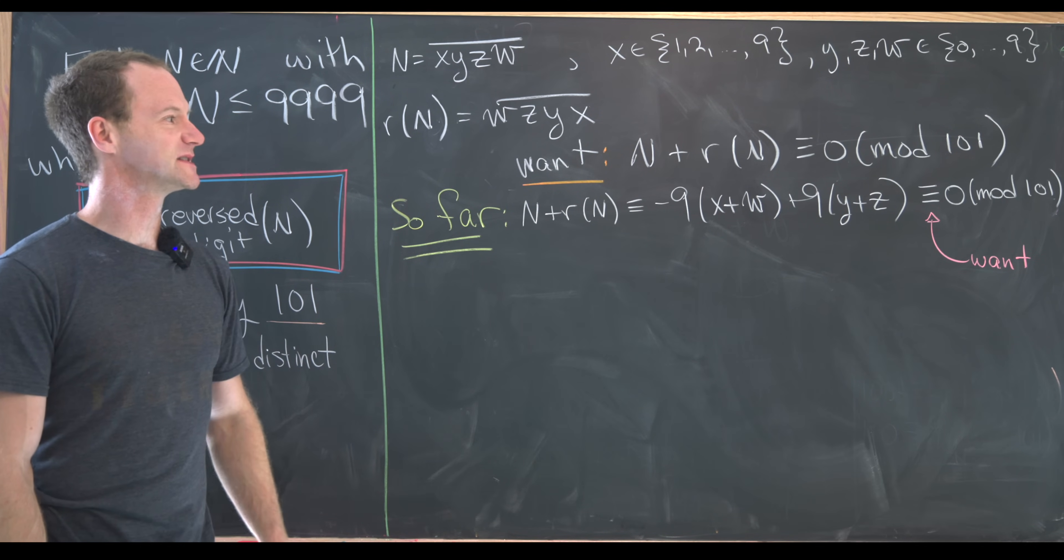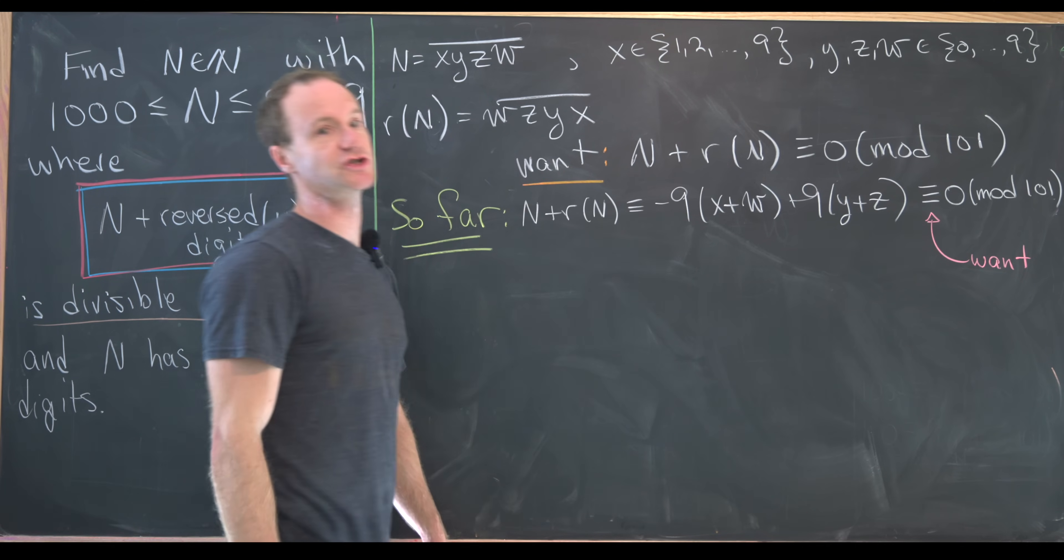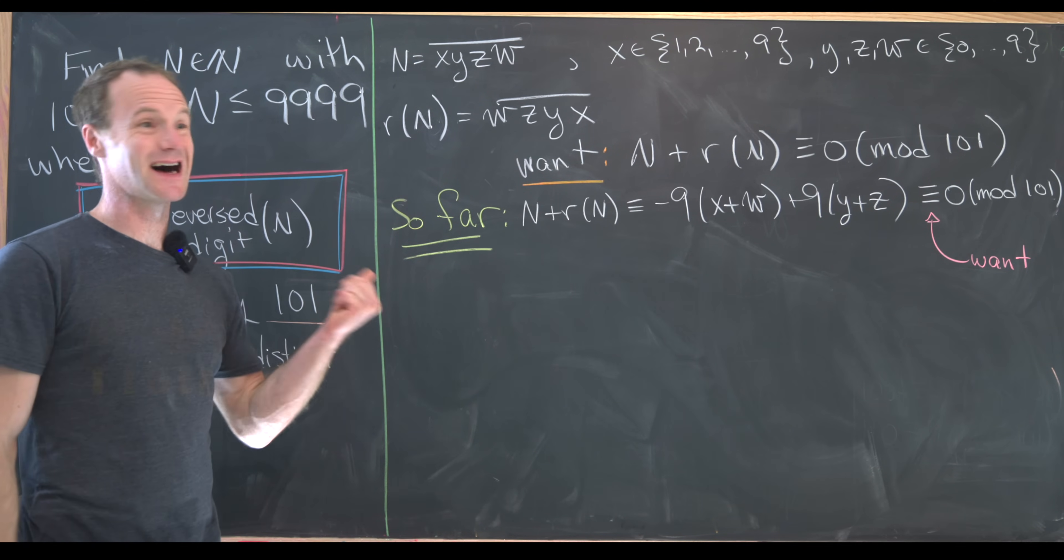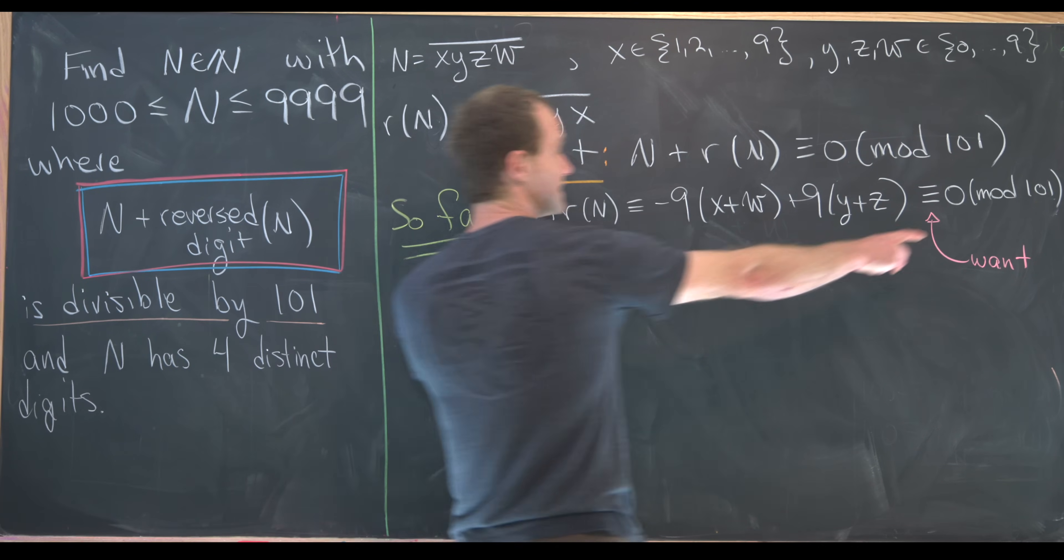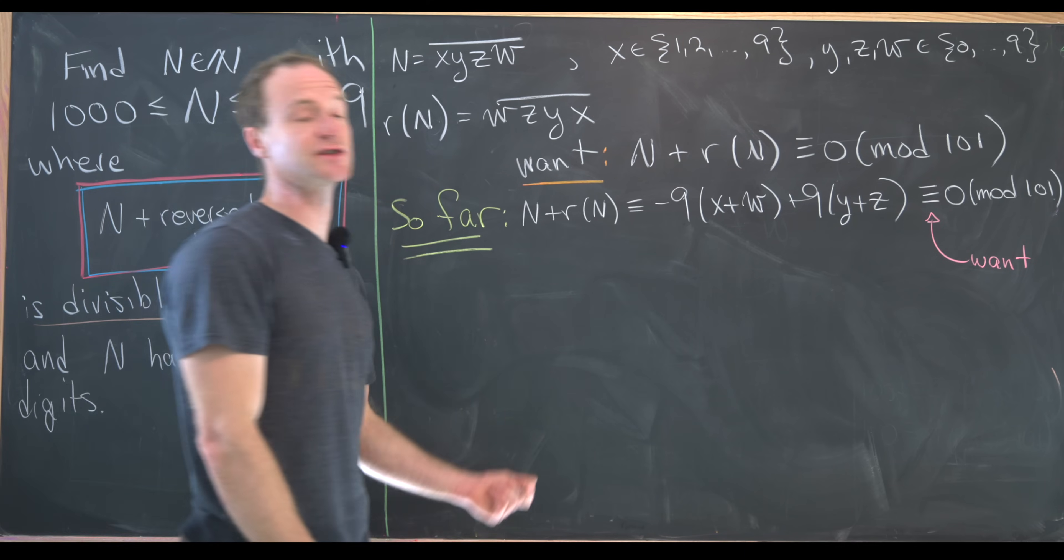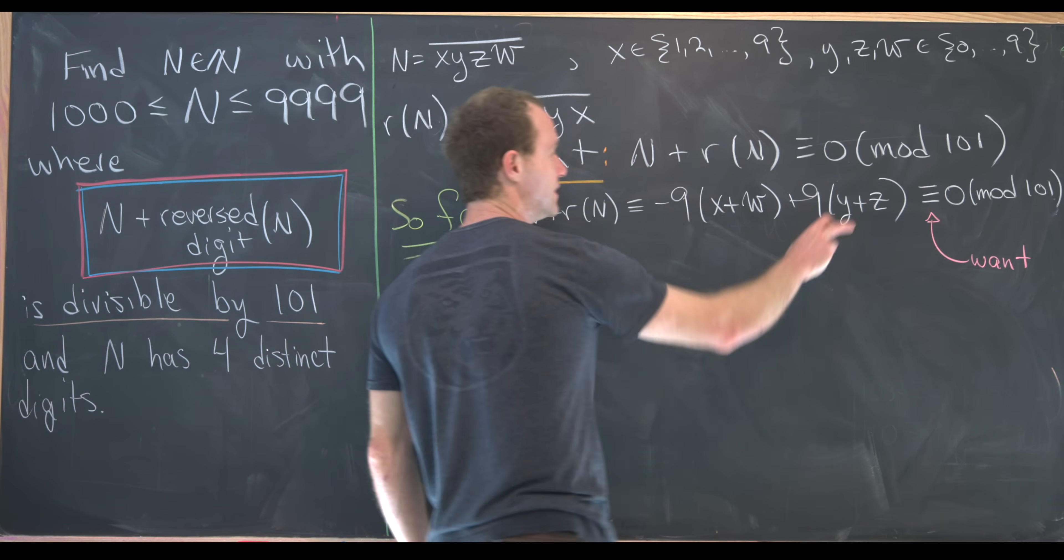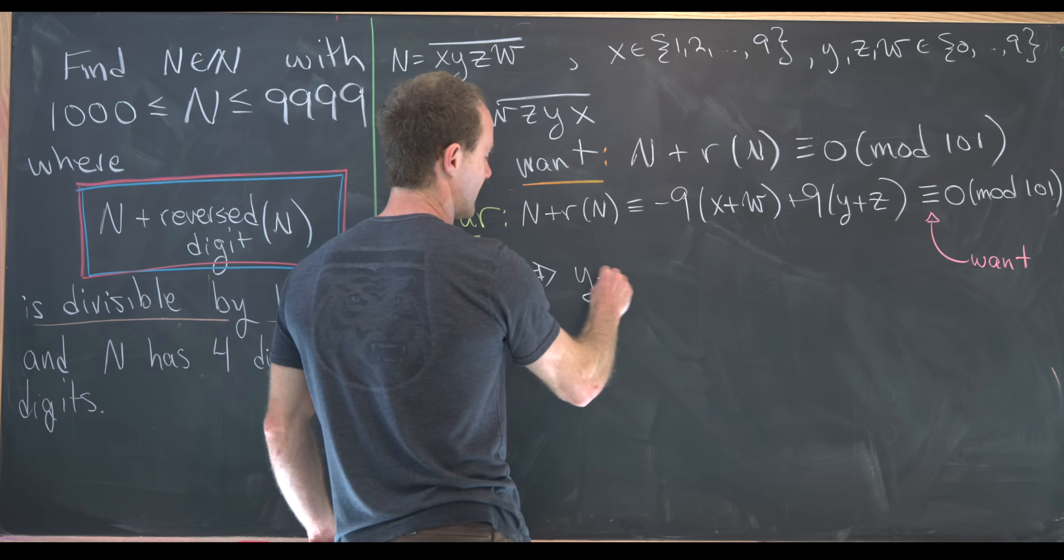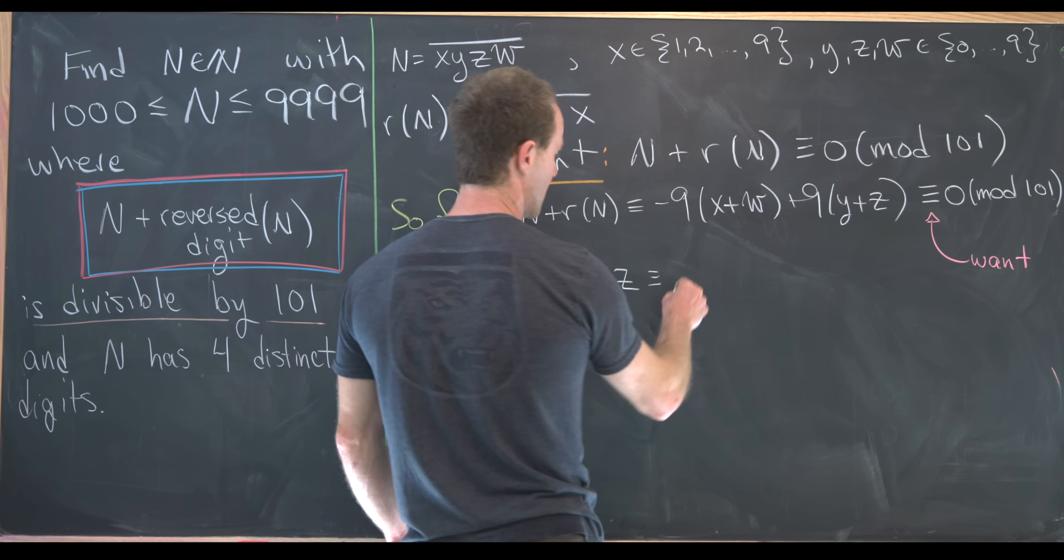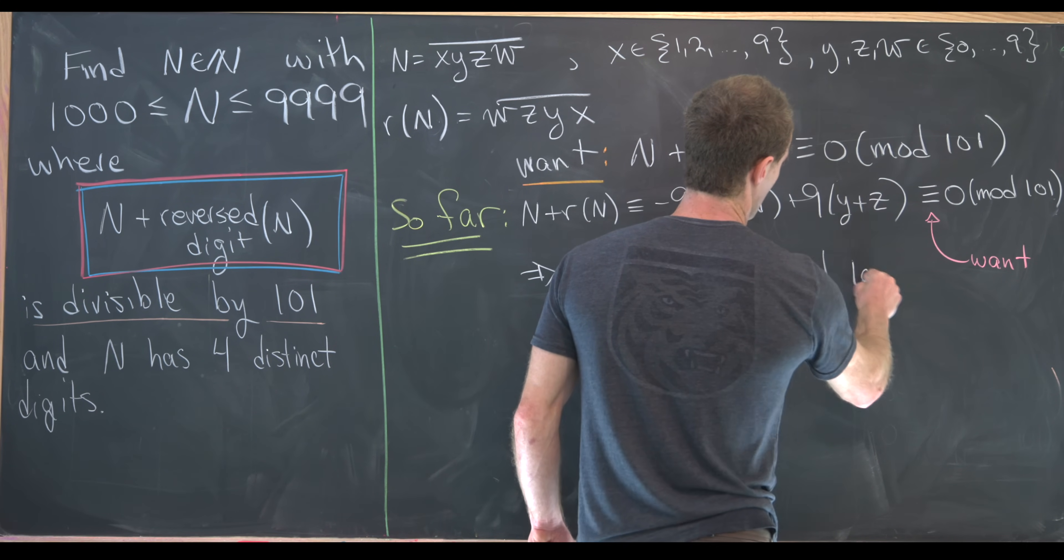Well now let's maybe simplify that a little bit. So we can see that 9 is invertible mod 101. That's because 9 and 101 are relatively prime. So that means we can take this congruence and just cancel the 9 off. Furthermore, we can add this X plus W to the other side of the congruence and we will be left with Y plus Z must be congruent to X plus W modulo 101.